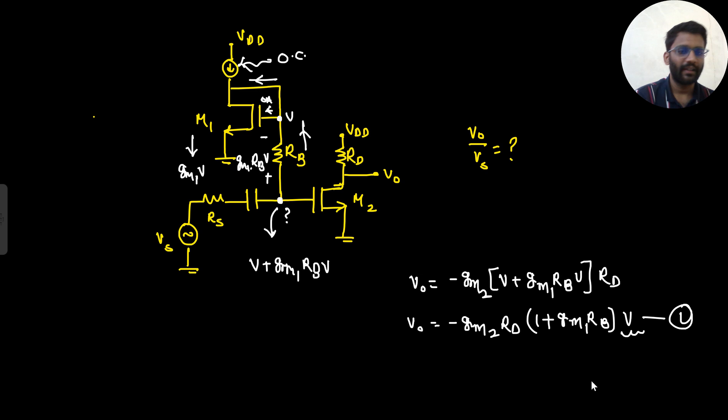Now we need to find the value of V in terms of Vs. So how we will find? Look, this gmv current is flowing from here and the same current is flowing from here. Now there will be zero ampere current in the input side.